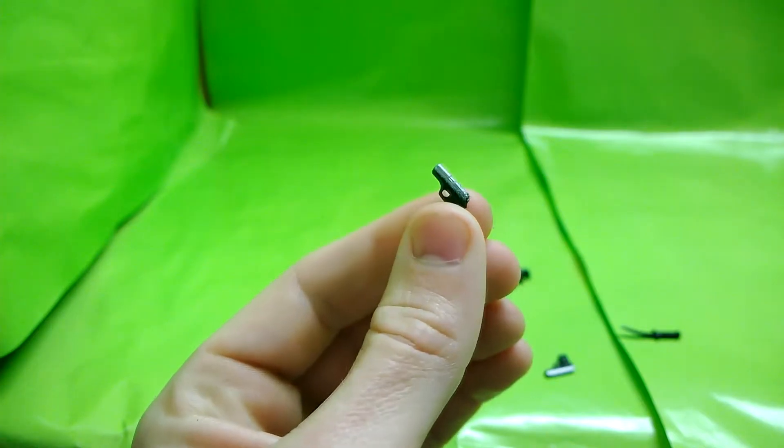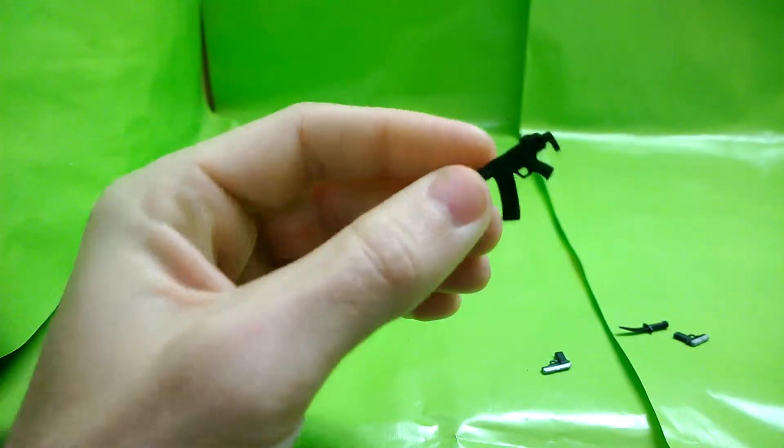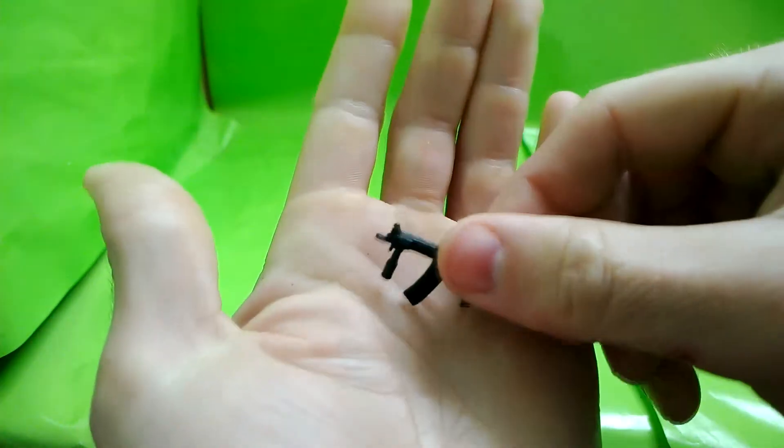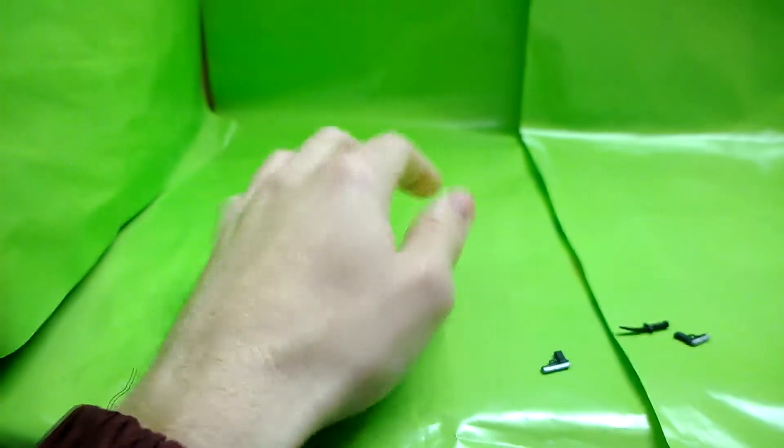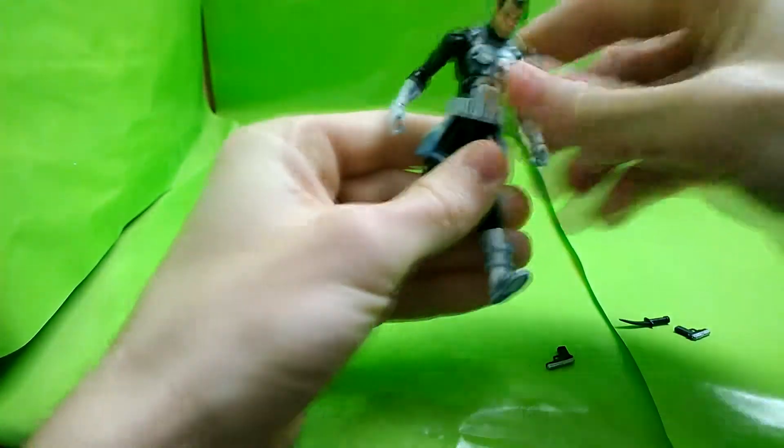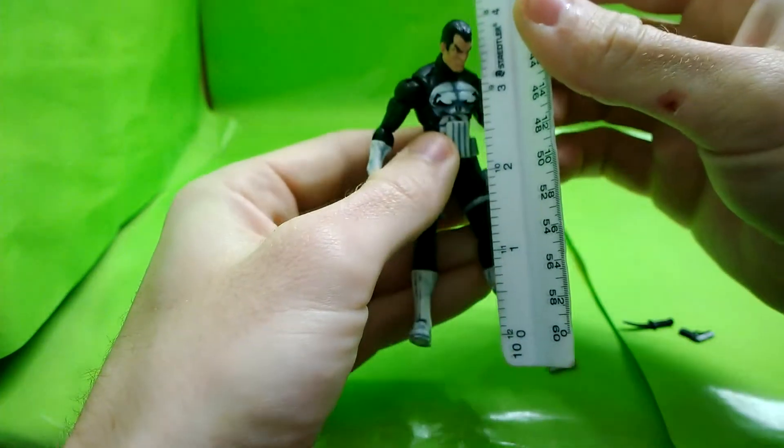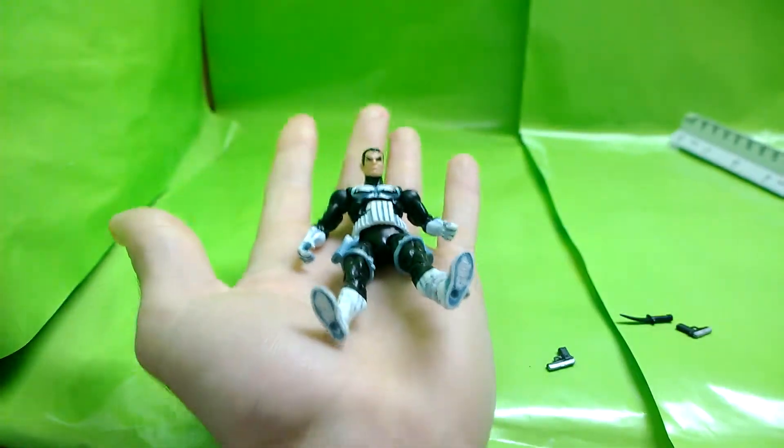These look like the pistols that Tom Jane had in his Punisher. We come with an Uzi style gun, pretty good detail. This figure stands about four inches. Look at how small it is in my hand.